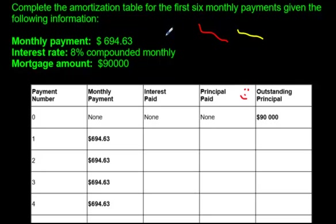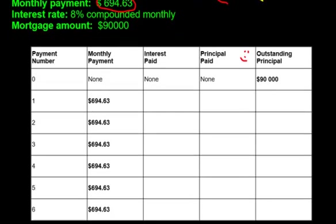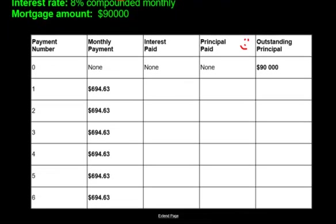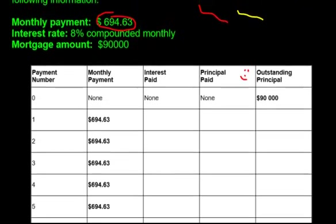Complete the amortization table for the first six monthly payments given the following information. The monthly payment is $694.63 — as you can see, that's already been put on this table and written in.